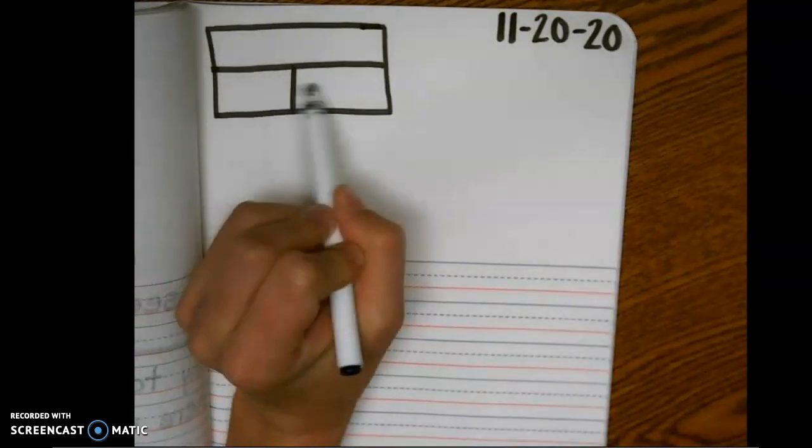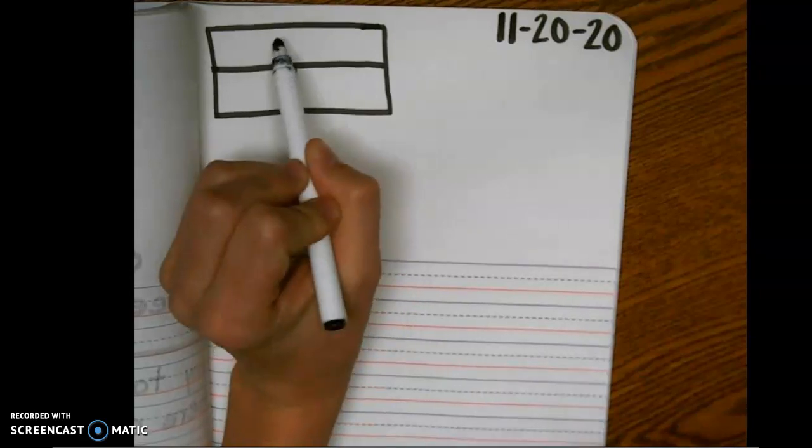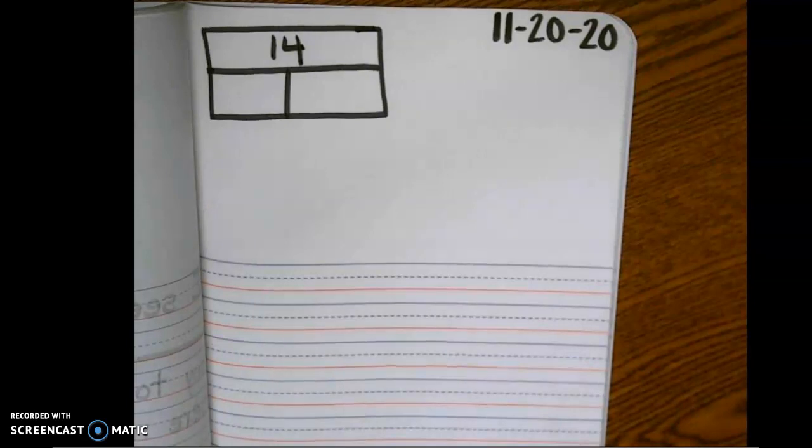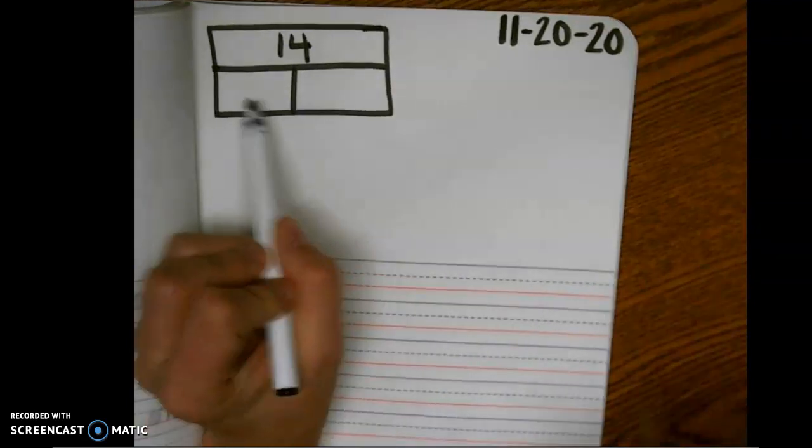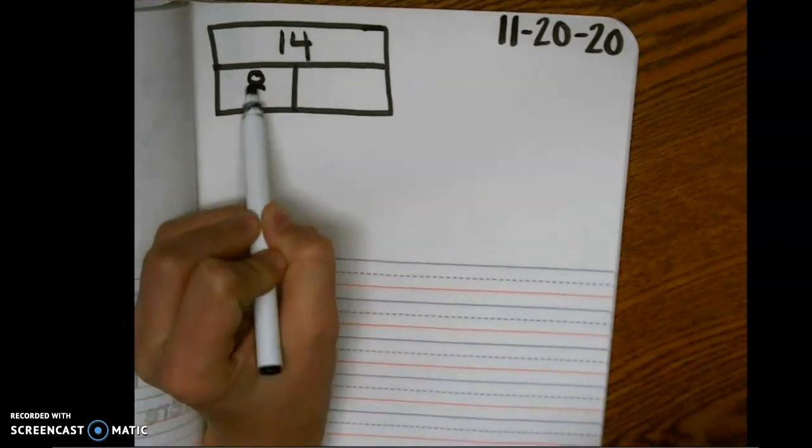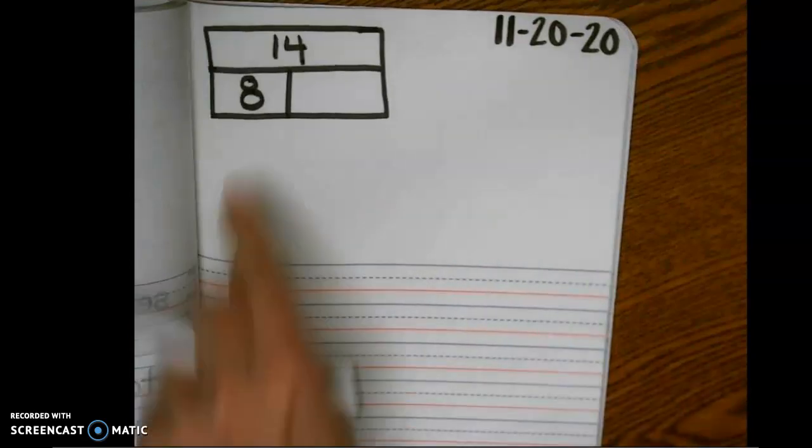Let's go ahead and fill in our whole. This whole number, which are two parts combined to make, we're going to say is 14.